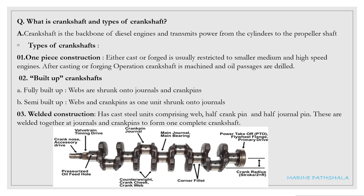The second type is the built-up crankshaft, which is further divided into two subtypes. The first is fully built-up: webs are shrunk onto journals and crankpins. The second is semi-built-up: webs and crankpins form one unit shrunk onto journals. The third type is welded construction: it has steel cast units comprising web, half crankpin, and half journal pin, which are welded together at journals and crankpins to form one complete crankshaft.